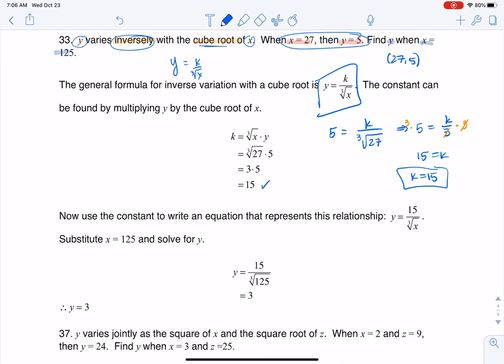Now, the way I wrote it up in the solutions was I solved this variation equation for k, and then I plugged in my x and y value. You can do it that way, or if you want, you can just solve for k by plugging into the original variation equation. Either way, k is 15.